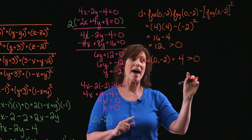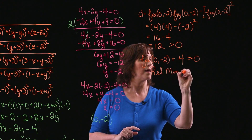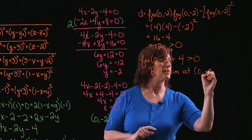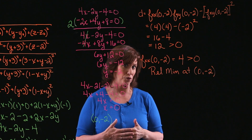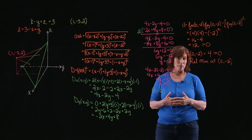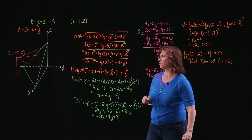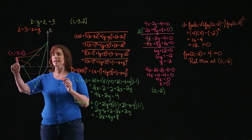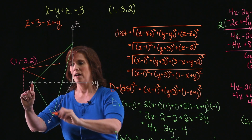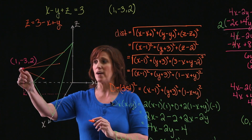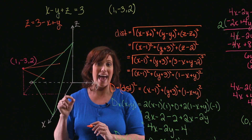To determine whether it's a minimum or maximum, I look at the second partial with respect to x at (0, negative 2), which is 4. Because it's positive, I have a relative minimum at the point (0, negative 2). Now, I'm looking for an absolute minimum, not just a relative one. However, looking at the picture, the distance from the given point to any point on the edge of the plane is greater than going into the plane, so this relative minimum is indeed the absolute minimum as well.